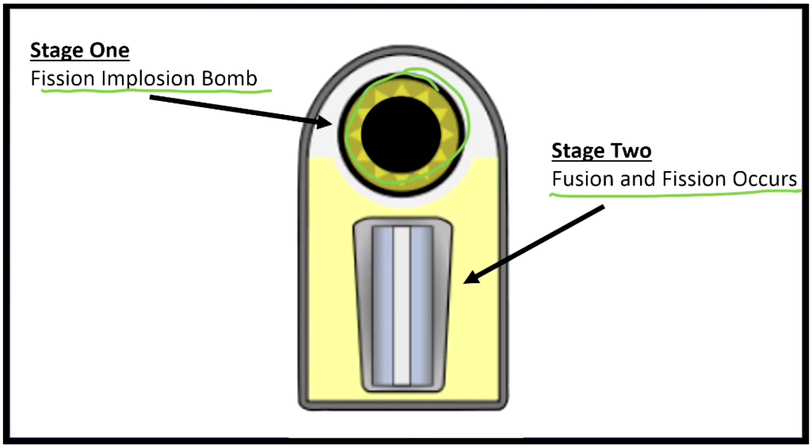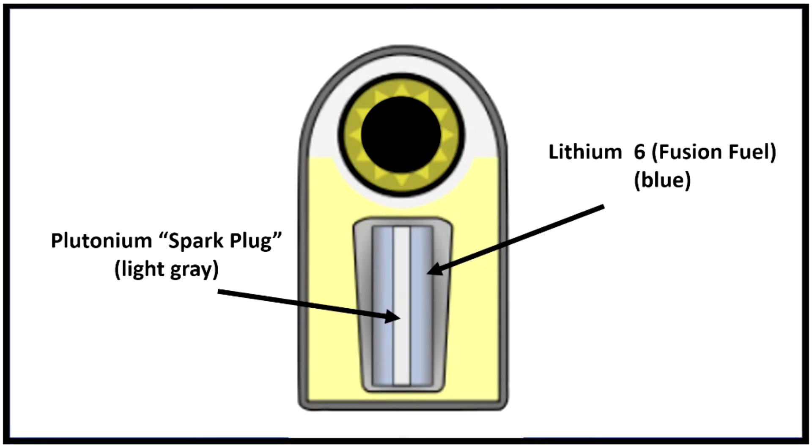Stage two has fission and fusion occur down here. And so we'll talk about all the different parts in our stage two. We've already looked at the fission implosion bomb. So let's take a closer look at what happens in the bottom of this device. In the very center, in that light gray, we see the plutonium spark plug right there. And on the outside, we see lithium six. That's in the blue.